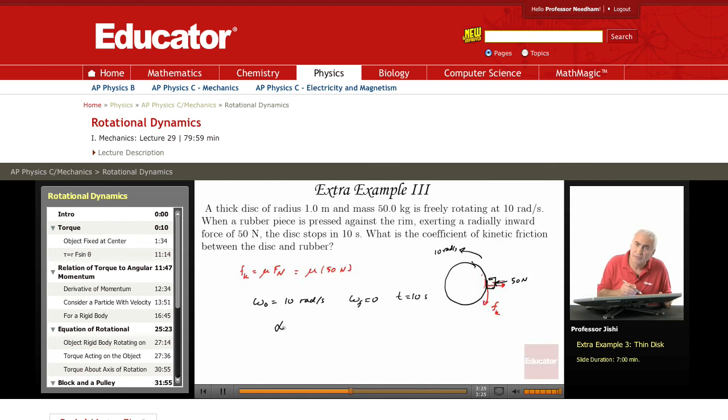So what is the angular acceleration alpha? We have omega equals omega_0 plus alpha T. Omega, the final omega is 0. Omega_0 is 10 radians per second plus alpha T. T is 10 seconds. So this means that alpha is minus 1 radian per second squared. So it's 1 radian per second squared. The minus simply means that it's negative acceleration because it's slowing down now. It slows down to a stop. So we have alpha, it's 1 radian per second squared.